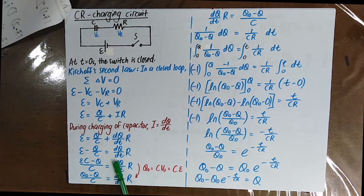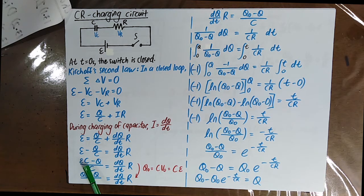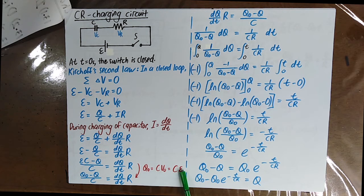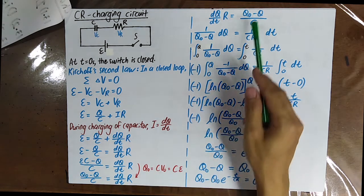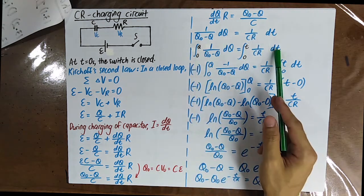E times C is equal to the maximum charge that can be stored on the capacitor, which is equal to Q0. So Q0 equals CE. And E is V0, which means the maximum potential difference across the capacitor. When you see DQ and DT, you know that you are going to do integration.